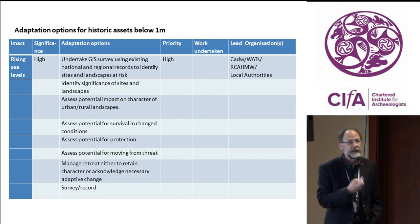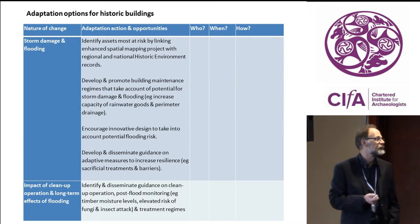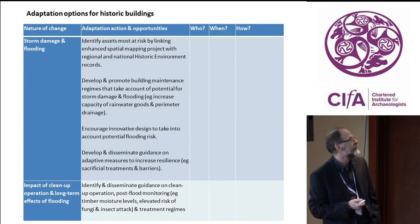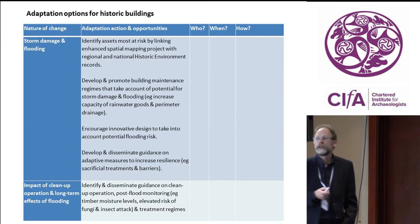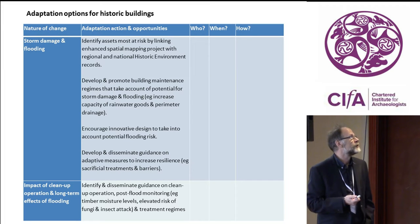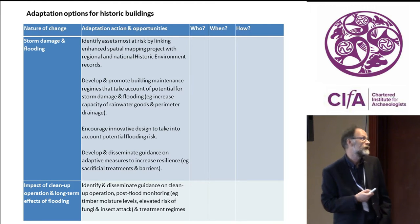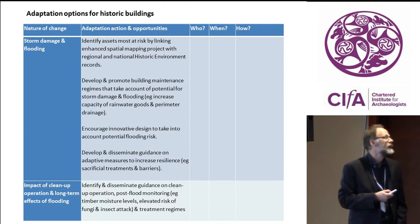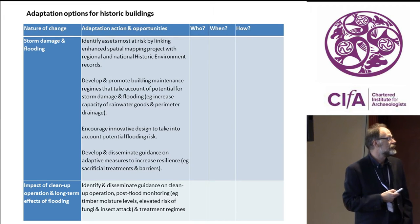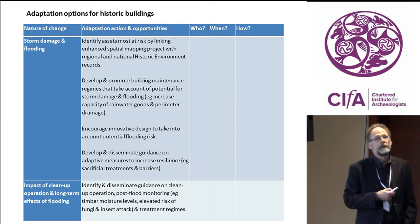The last option is survey and record — preservation by record — though how helpful is that nowadays? This is from a colleague, Jill Fowler, in Cadw, looking at adaptation options for buildings: identify assets most at risk, develop and promote building maintenance regimes for storm damage and flooding, encourage innovative design to take into account potential flooding risk, and develop and disseminate guidance on adaptive measures to increase resilience, including the impact of clean-up operations and long-term planning effects.